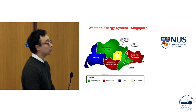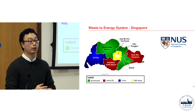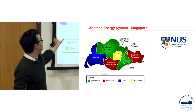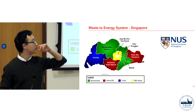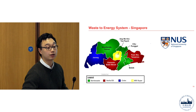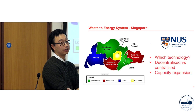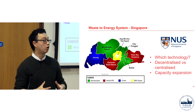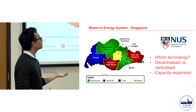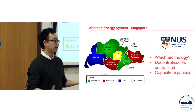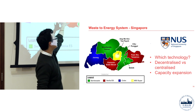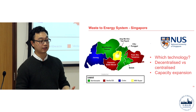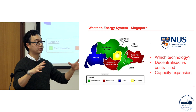I spent two months at NUS last year, where one of the problems they were looking at was waste-to-energy systems. Waste management in Singapore is challenging given the small area. I used Bayesian networks to address what technologies are best to use across Singapore — mechanical and biological systems, recycling — and how to characterize which are best. One key question is decentralized versus centralized: put all waste into one central site, or have each region handle its own processing.